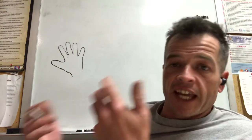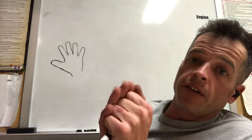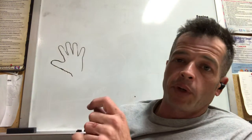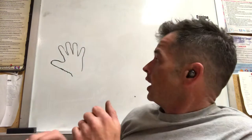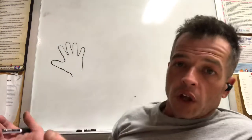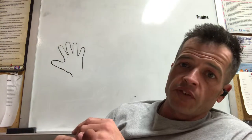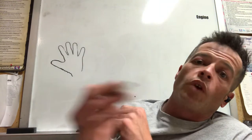Alright, this is fireground hydraulics: the hand method. The hand method is the bread and butter for most of our lines that we use on your typical room and content structure fires. It is based off of flows. Now if you haven't watched my first video on the second principle friction loss, you need to watch that first and then this will make more sense as we go along.